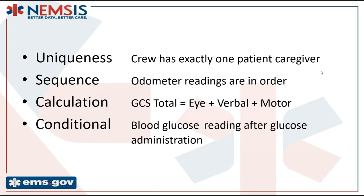Here are some examples of what we can do using Schematron rules. Schematron can check for uniqueness — for example, that exactly one crew member is the primary patient caregiver. It can check sequences, such as making sure odometer readings are in order. It can do calculations — for example, that the sum of the GCS eye, verbal, and motor components equals the GCS total recorded on the report. And Schematron can do conditional rules — like expecting that if glucose was administered, there is a blood glucose reading in vital signs taken after the glucose was administered.